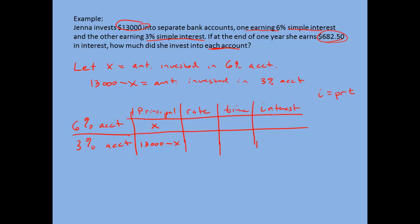The rate for the 6% account is going to be 0.06 — remember we need to use the percent as a decimal. To turn a percent into a decimal, move the decimal place two places to the left. So 6% becomes 0.06. The rate for the 3% account would be 0.03, using the same method — or you could divide by 100. The time is one year for each account, as stated in the problem.